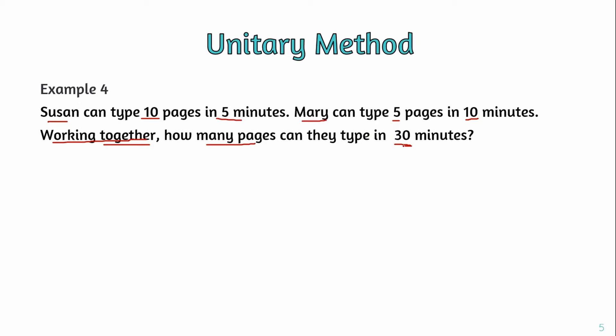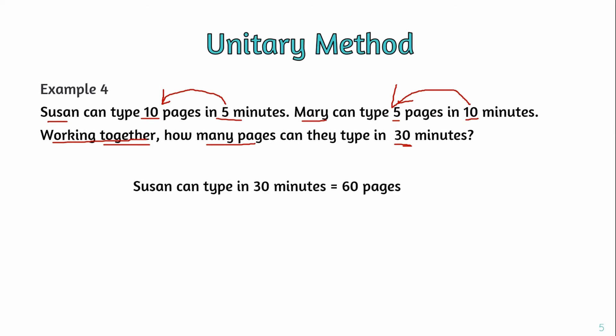Shushan types 10 pages in 5 minutes, so she types 2 pages per minute. Mary types 5 pages in 10 minutes, so she types 0.5 pages per minute. Together they type 2.5 pages per minute. In 30 minutes, they can type 30 times 2.5, which equals 75 pages.